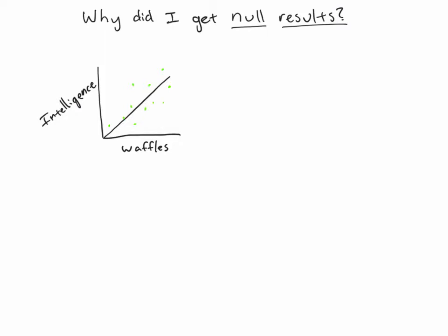You're expecting a statistically significant correlation between the variables. And instead of that, you get something that looks like this, where there really doesn't seem to be any relationship, or maybe there's some indications of a relationship, but you don't achieve statistical significance.